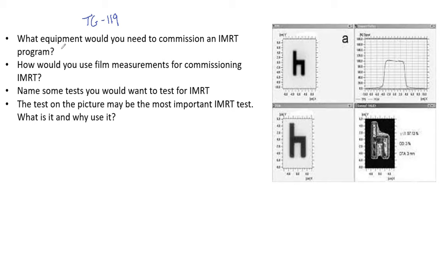You also want a chamber that is smaller than a Farmer chamber. Farmer chambers are quite large in the chamber world, so you would want a chamber around 0.125 cc ideally. A CC13 or something similar is a perfect type of chamber. You can use the water phantom with a chamber, but you can also use film.